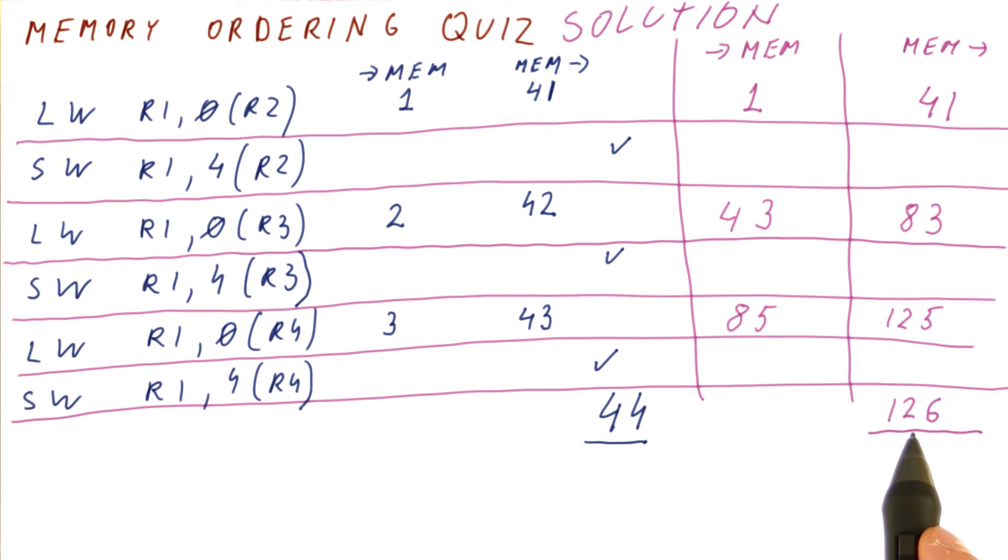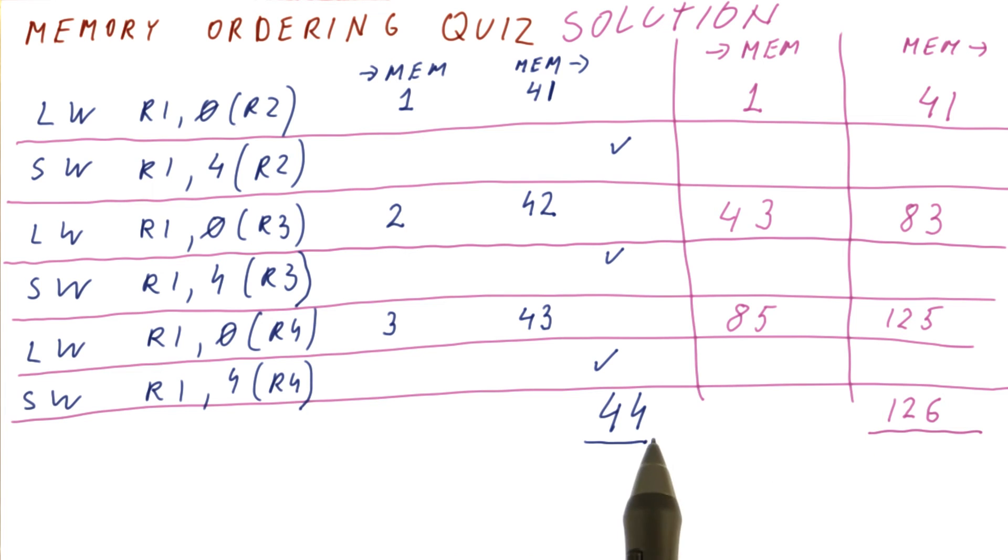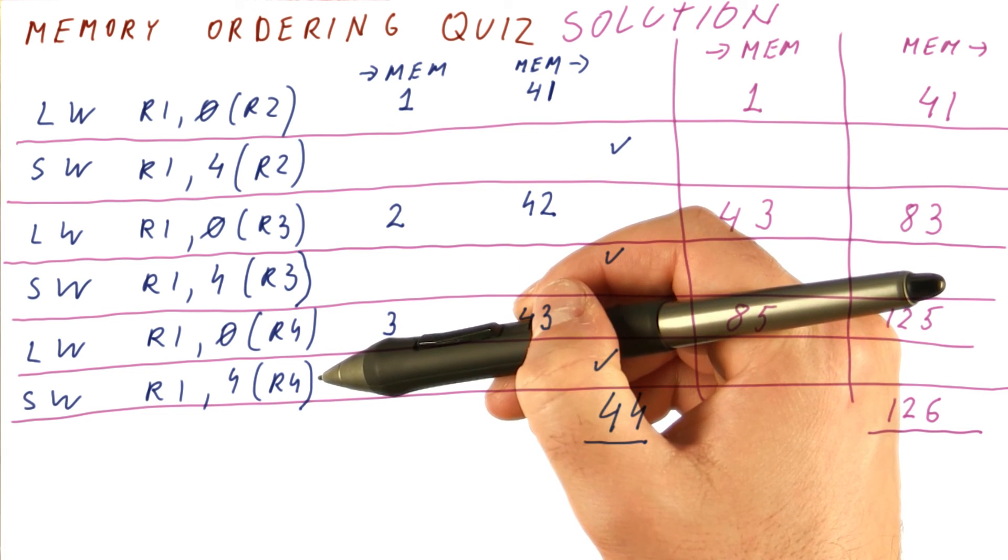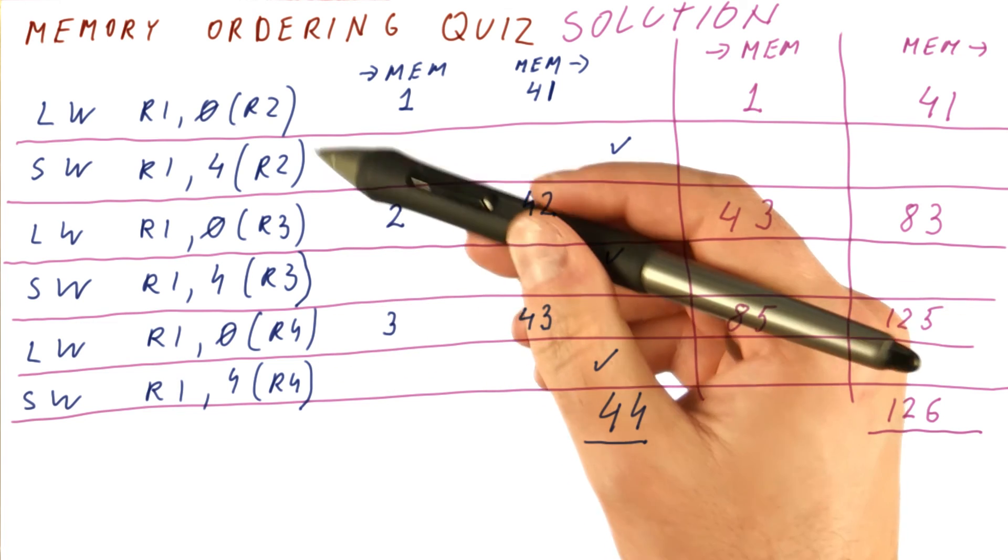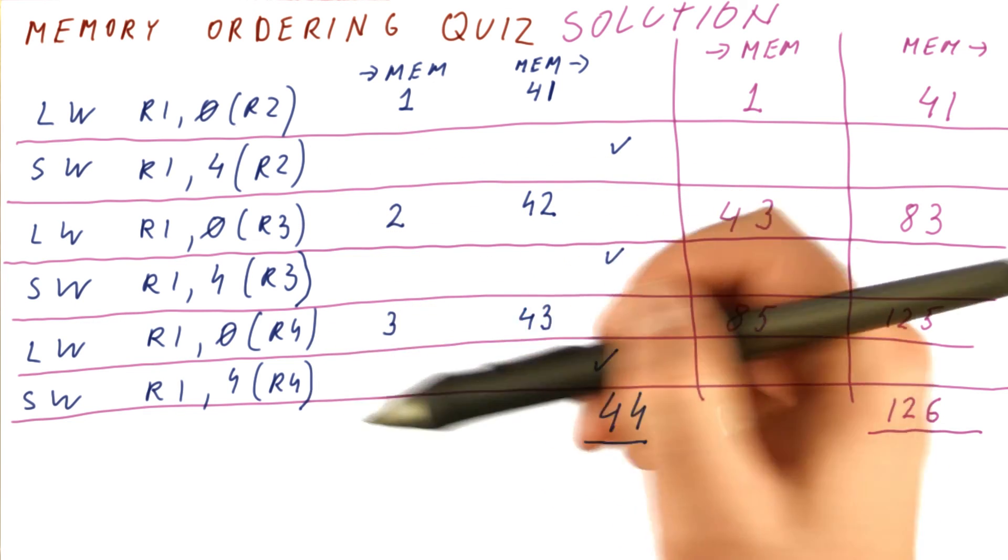As you can see, it took almost three times as long in this case to do this as it did when we were trying to do things out of order. So there is a huge advantage in trying to reorder load store instructions, but it carries a risk of having to recover from loading the wrong value from memory because we should have loaded the value from the store.